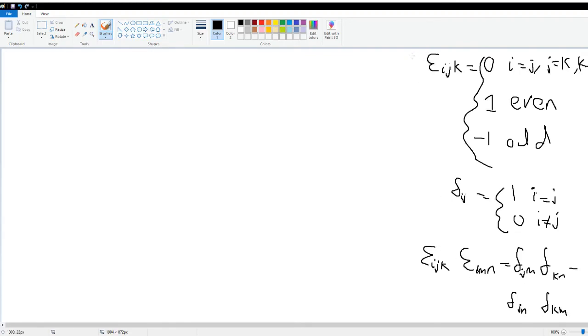This is what's going to be needed for the proof. One more time, what we're trying to get is a cross (b cross c) to equal b(a dot c) minus c(a dot b).